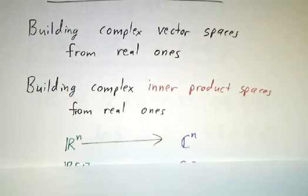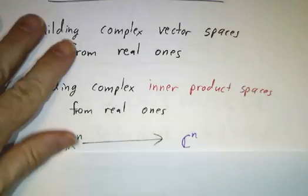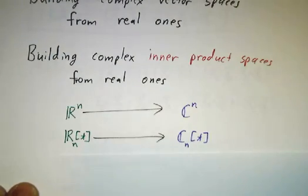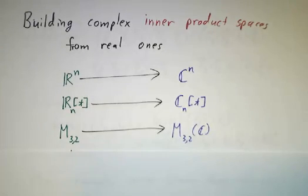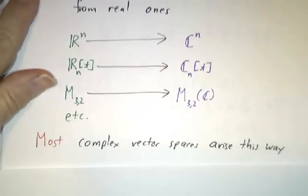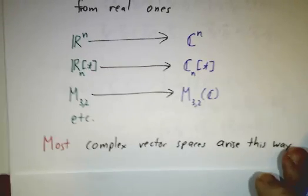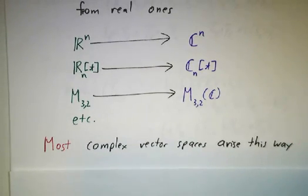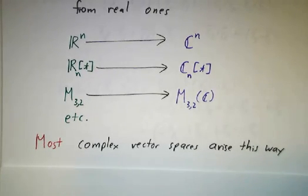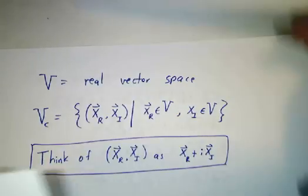It's really pretty simple, and it's the way that you get Cn from Rn, and it's the way that you get complex polynomials from real polynomials, and it's the way that you get complex 3x2 matrices from real 3x2 matrices. In fact, most of the examples of complex vector spaces that you've seen really are complexifications of real vector spaces. There are some complex vector spaces that really arise on their own and not from complexification, but they're less common.